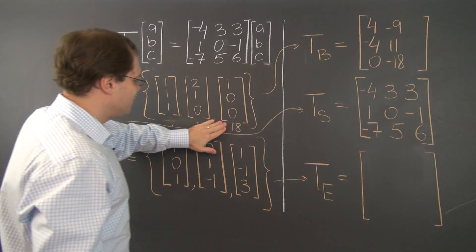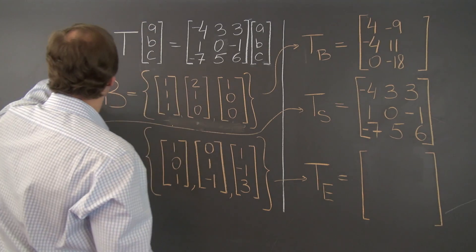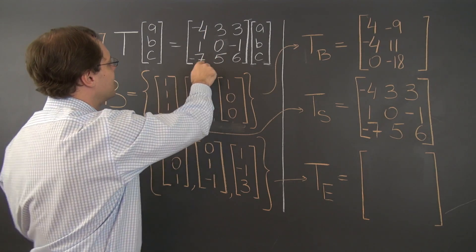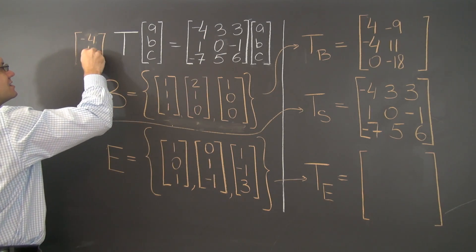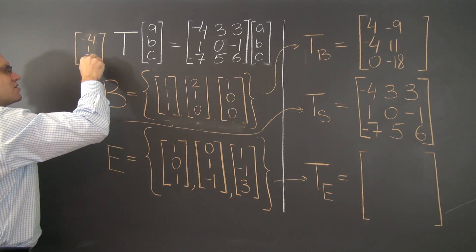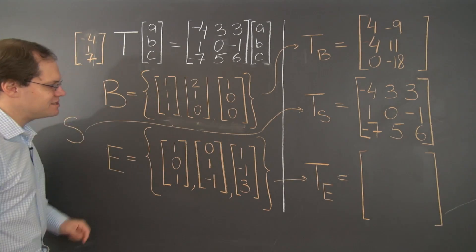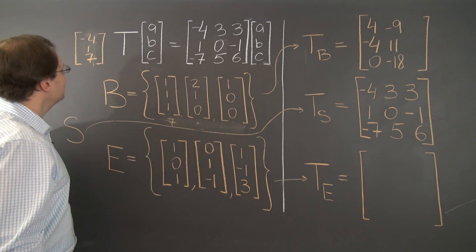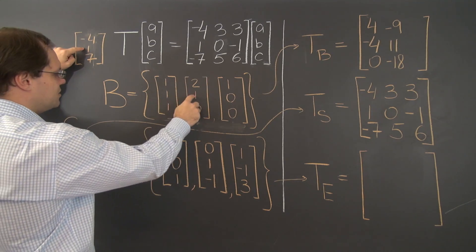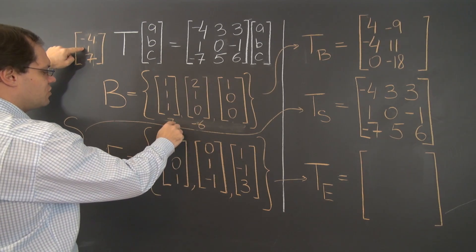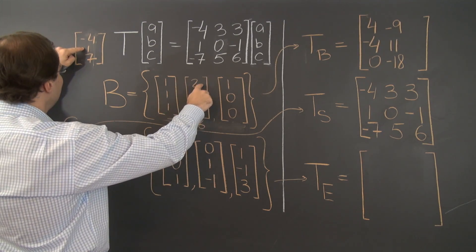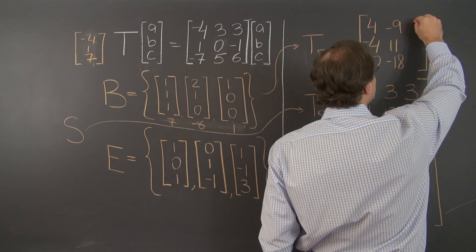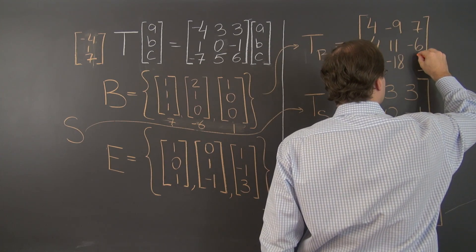Finally, for the last column, we apply the same linear transformation to the third basis element, which just gives the first column of the transformation matrix: (-4, 1, 7). Decomposing this with respect to our basis: we need 7 of the third element, giving 7 in that position; we need 1 in the middle so -6 of the second; and in the first position we have 7 minus 12 = -5, so we need 1 of the first. The coefficients for column 3 are (1, -6, 7).